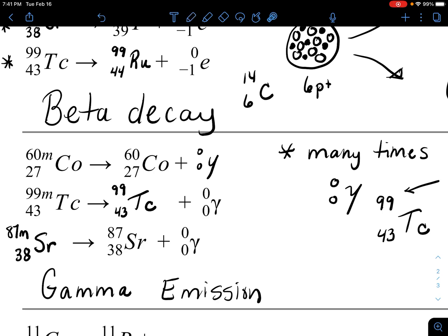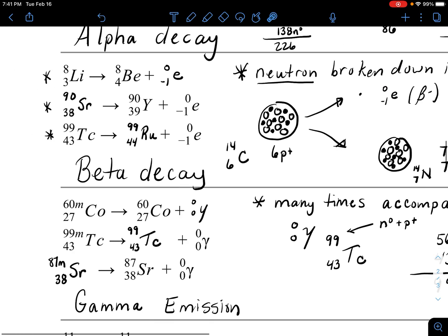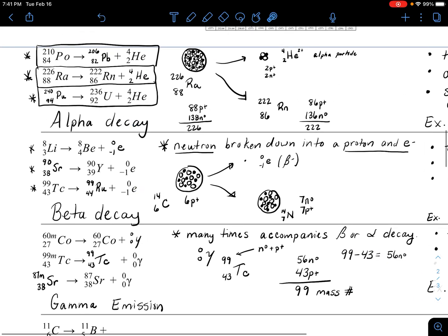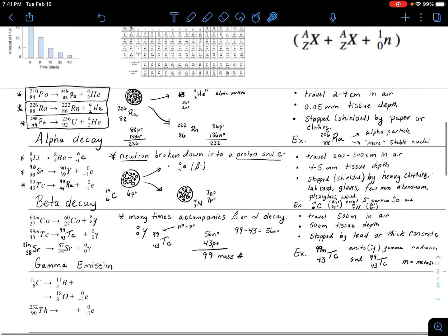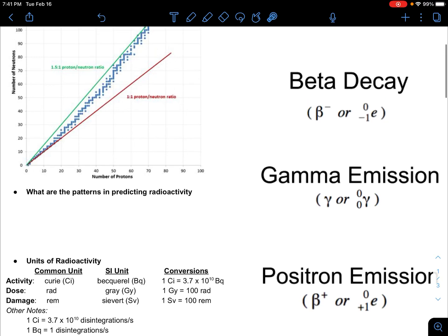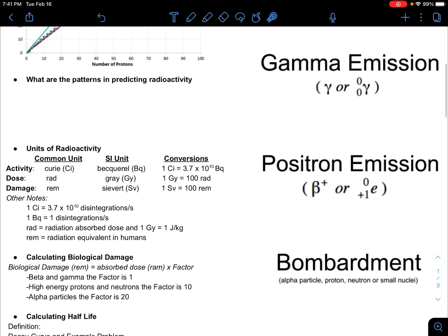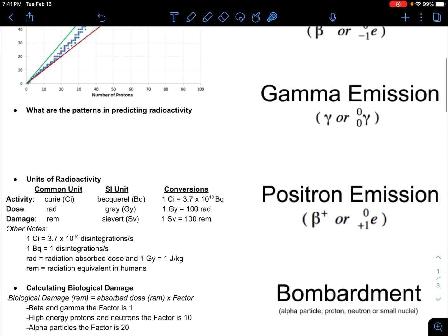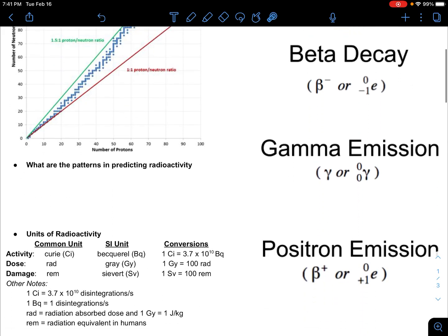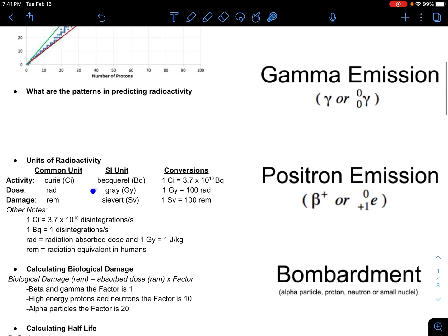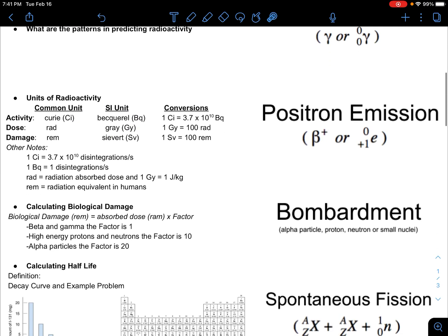Now in reality, gamma accompanies, meaning it's part of the alpha or beta decay, but there are unique times where it really just is a gamma emission. So that covers the three most common types: alpha, beta, and gamma. I do have plans of making positron, bombardment, and spontaneous fission, and then kind of going over the band of stability, predicting the patterns, talking about radioactive units, and calculating half-life.